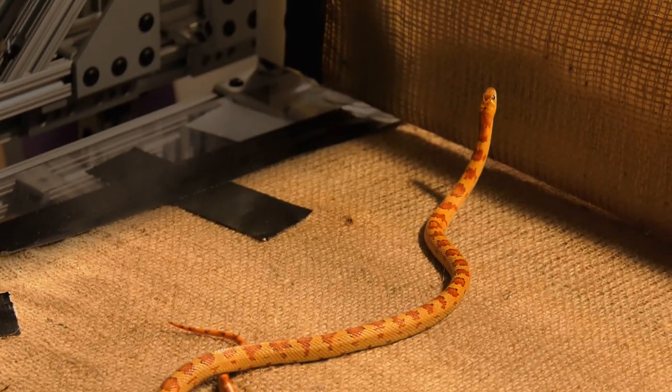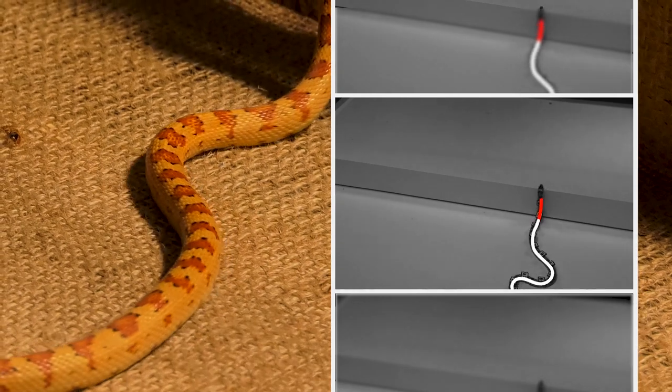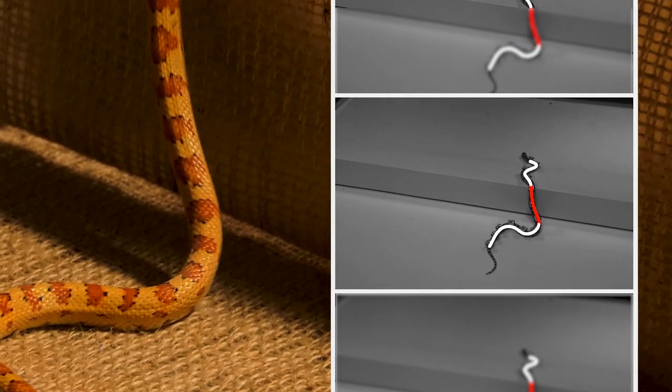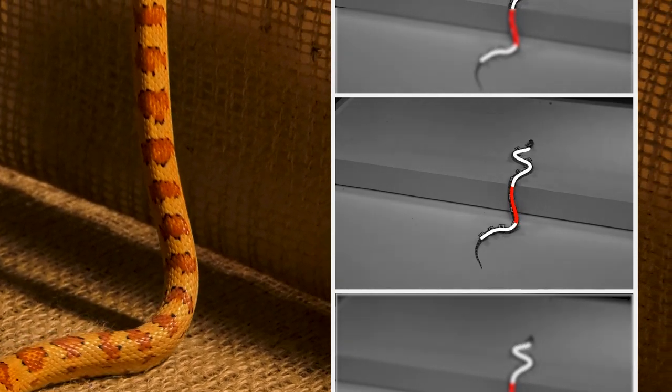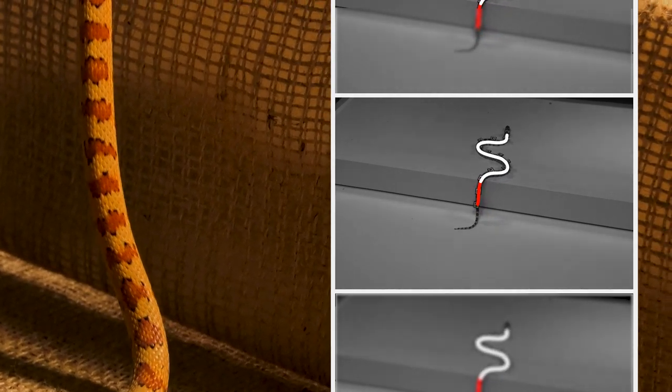We found that the snake uses what we call a partition gait, which people haven't described before. The snake will use the front and the rear part of the body to undulate laterally, both above and below the step like a wave. But then the body section in the middle will simply lift itself up and maintains a straight shape in the air, which is called cantilevering.